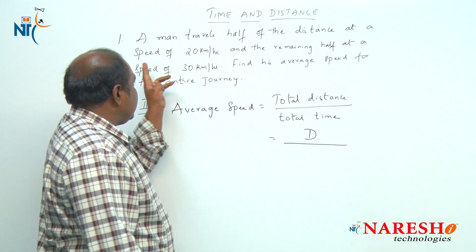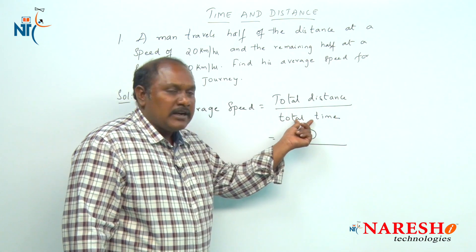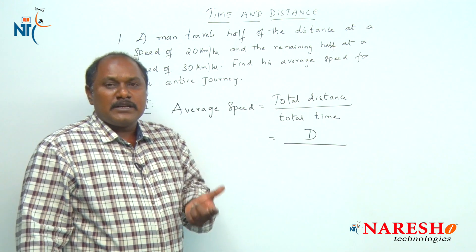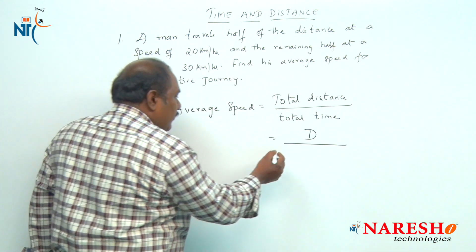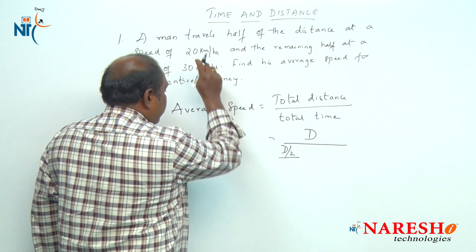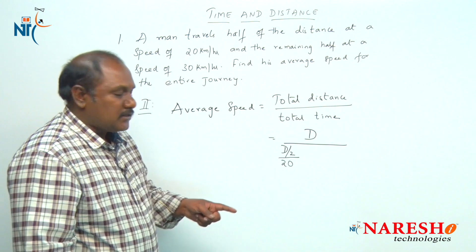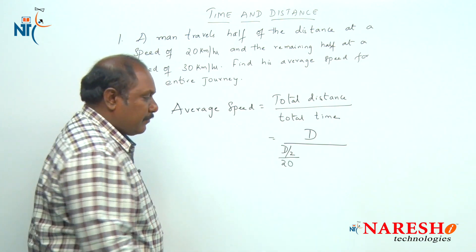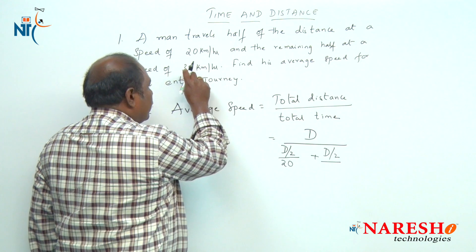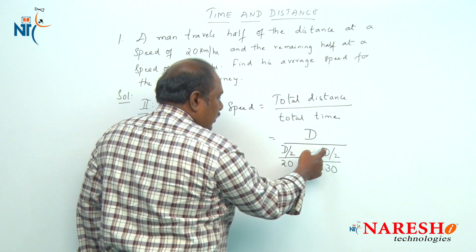For the first half of the distance, he is traveling at 20 km per hour. In the denominator we need the total time. We know that time equals distance divided by speed. The first half of the distance is d/2, traveled at 20 km per hour. The second half is also d/2, traveled at 30 km per hour. So total time is d/2 divided by 20, plus d/2 divided by 30.